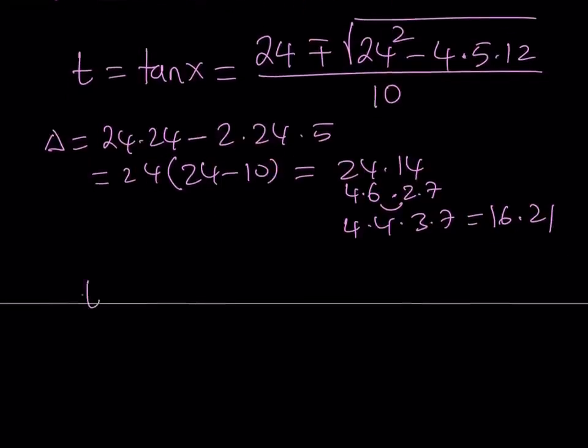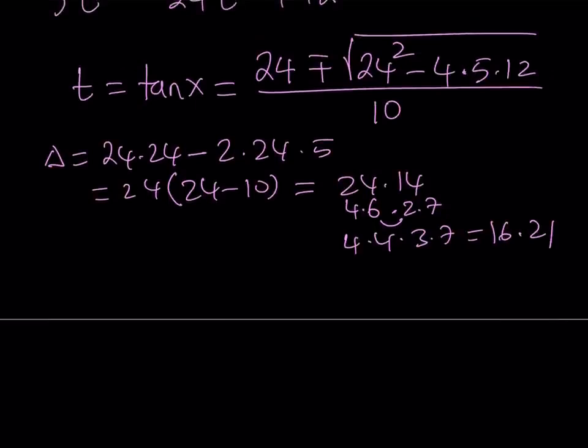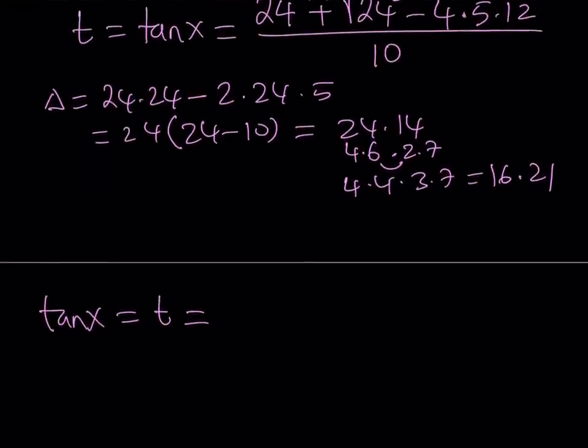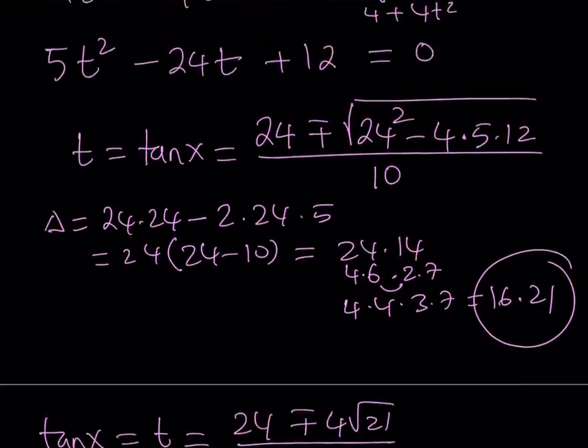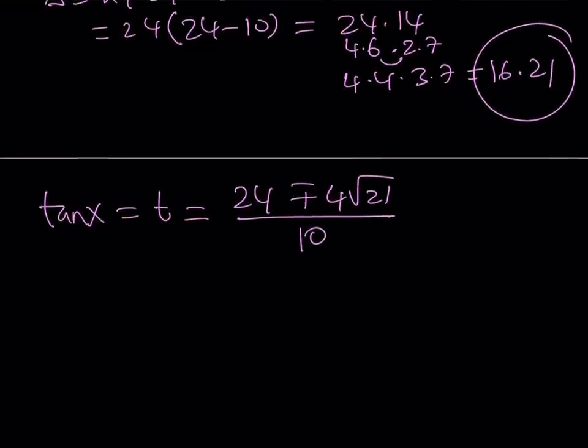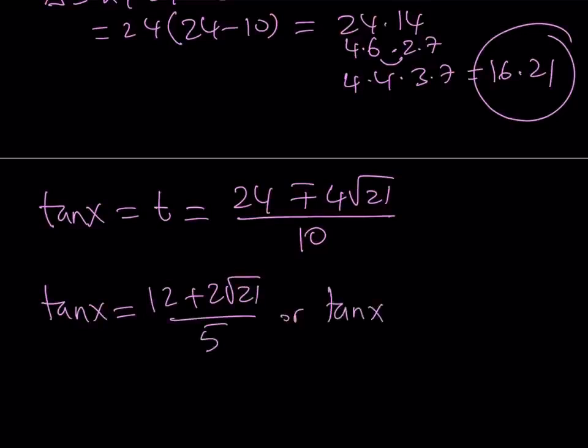When I take the square root, my tangent x value can be written as negative b was 24, plus minus, if you take the square root, you get 4 times the square root of 21, divided by 10. That can be simplified. This gives us two values. Tangent x is either 12 plus 2 root 21 over 5, or tangent x is 12 minus 2 root 21 over 5.